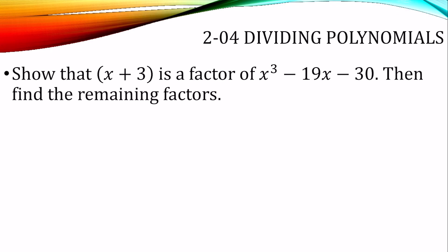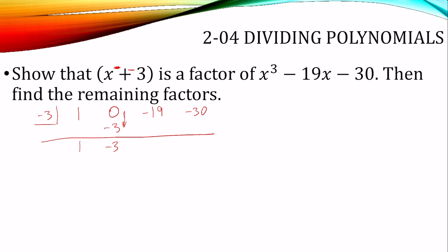Let's show that x plus 3 is a factor of this function and find the remaining factors. We'll do synthetic division and show the remainder is 0. This is x minus negative 3, so we put negative 3 in the box, and the coefficients are: 1x cubed, 0x squared, negative 19x, minus 30. Drop down the 1 and multiply — negative 3 times 1, and add 0 plus negative 3. Multiply negative 3 times negative 3 is 9; add negative 19 plus 9 is negative 10. Multiply negative 3 times negative 10 is 30; add and get 0. The remainder is 0, so we have shown that x plus 3 is a factor.